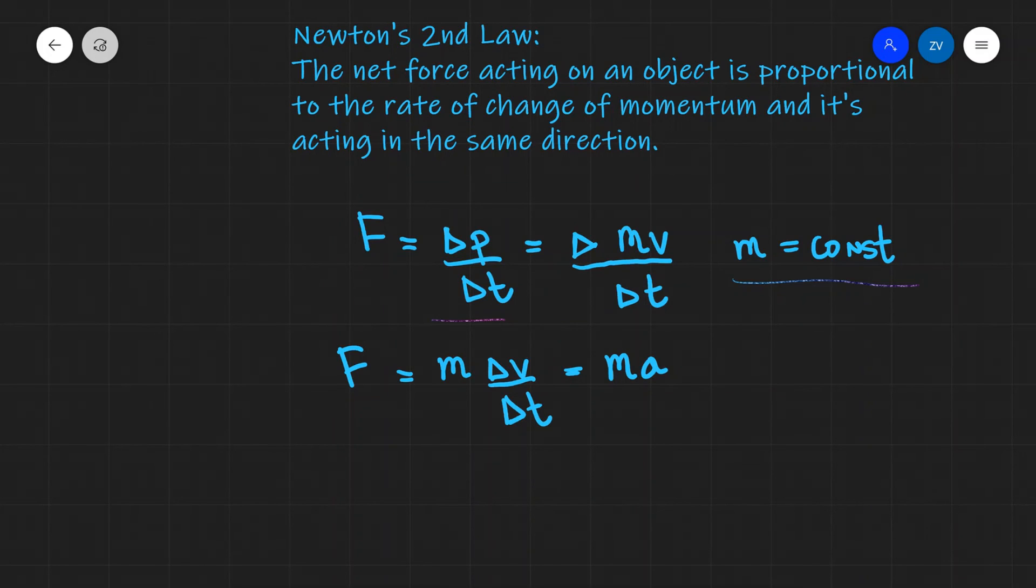Okay folks, hopefully Newton's second law makes sense now and how we get to the equation F = ma, assuming that mass is equal to a constant. If there are any questions, please feel free to drop a comment down below and thank you very much for watching!